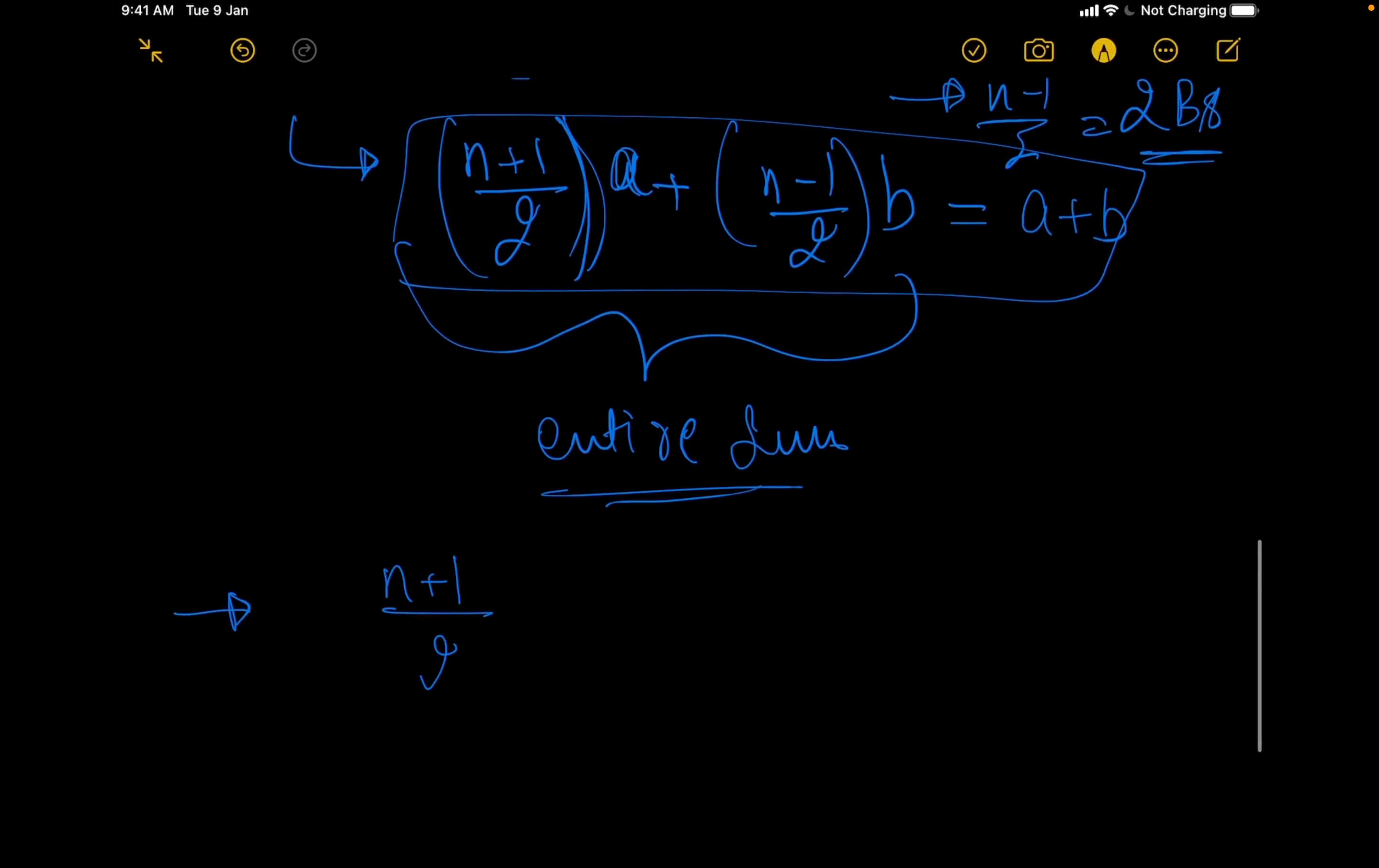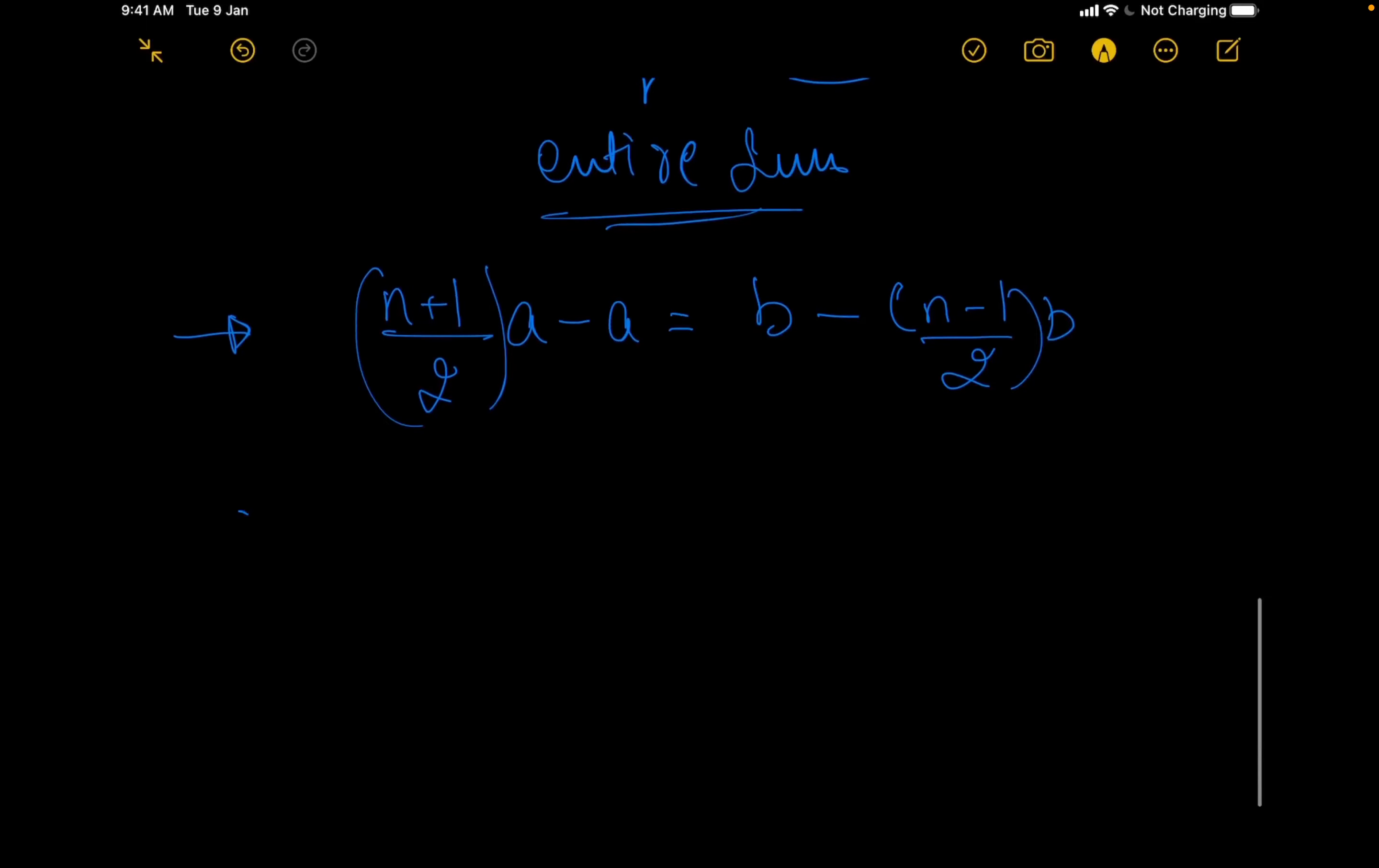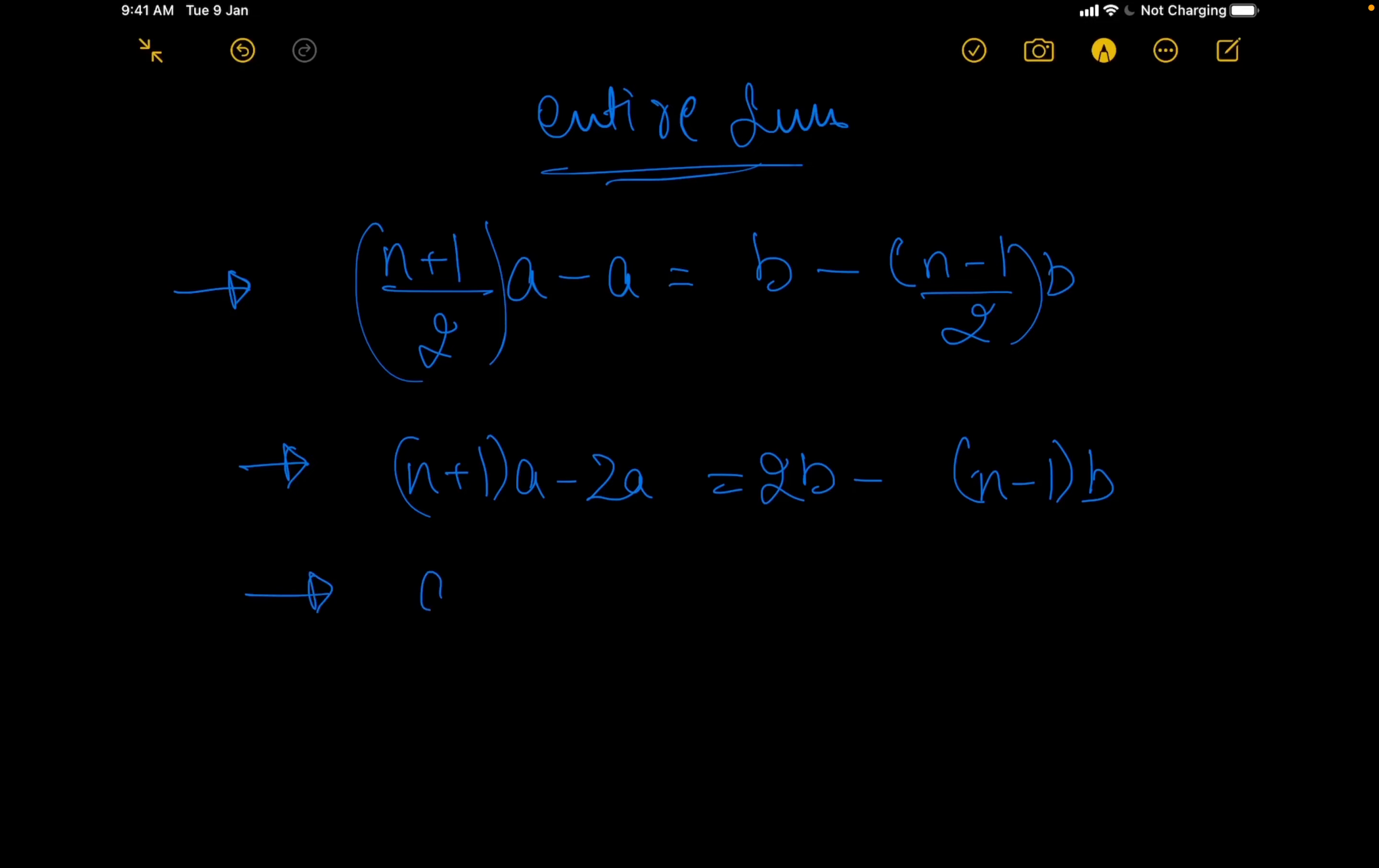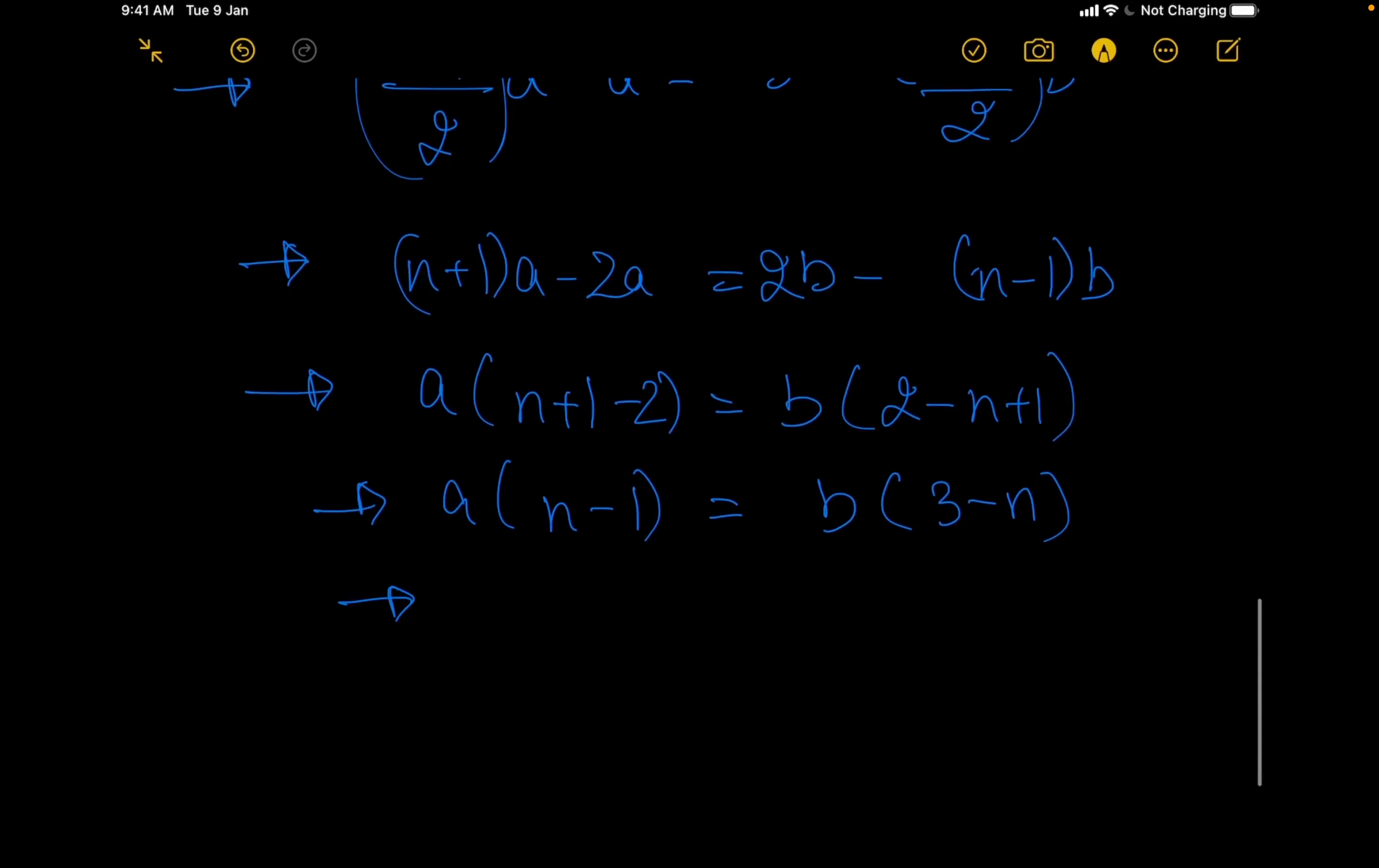Now, let us try to solve this particular equation. What we can say is (n+1)/2 times a minus a equals b minus (n-1)/2 times b. From this, we can say (n+1) times a minus 2a equals 2b minus (n-1) times b. Let us take a common: a(n+1-2) equals b(2-n+1). Let us simplify this: a(n-1) equals b(3-n), or we can say a/(3-n) equals b/(n-1).